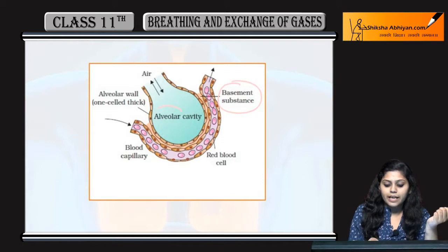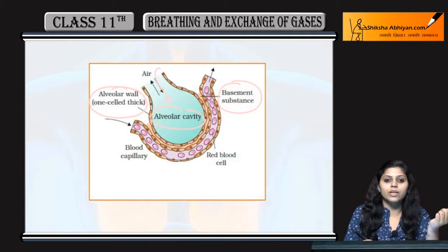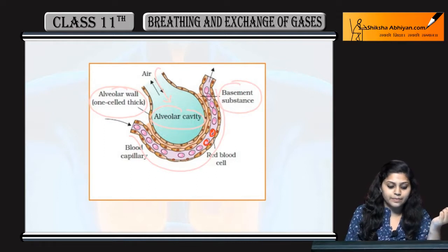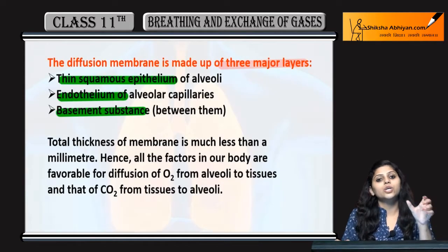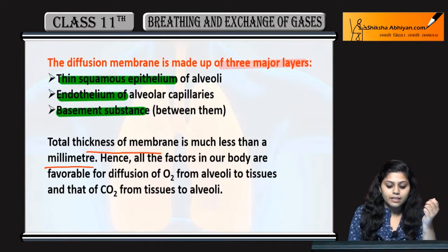The basement substance, alveolar cavity, alveolar wall — air enters the alveoli. Blood capillaries and some red blood cells are also there. The total thickness of the alveoli membrane is less than 1 mm.